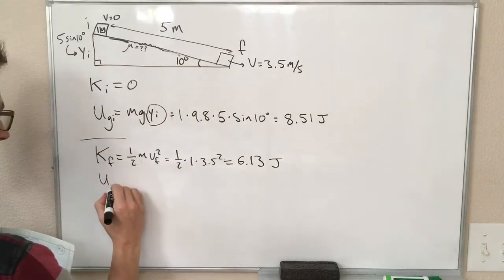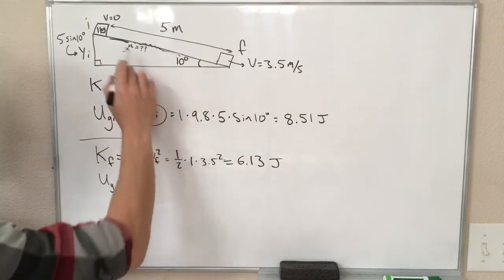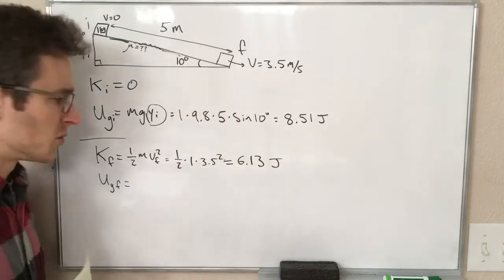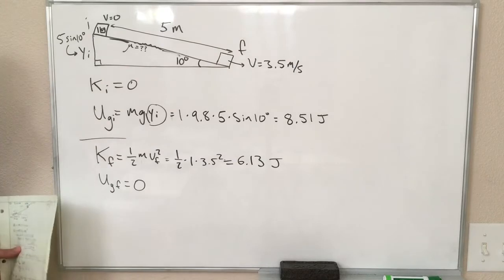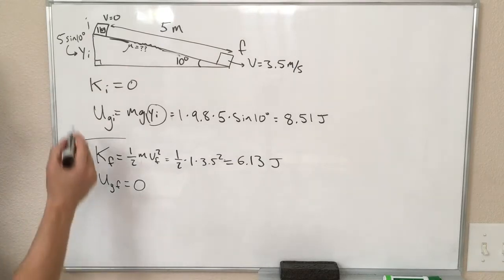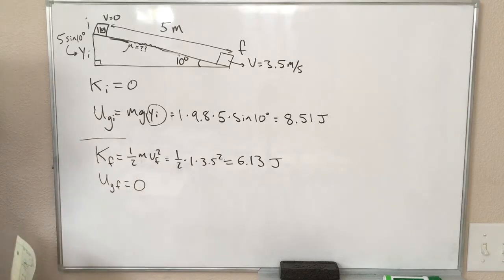How much gravitational potential energy is at the end? All the blocks at the bottom of the ramp, so it is now at a height of 0, and there are still no springs, so we're pretty much done with this little accounting exercise.